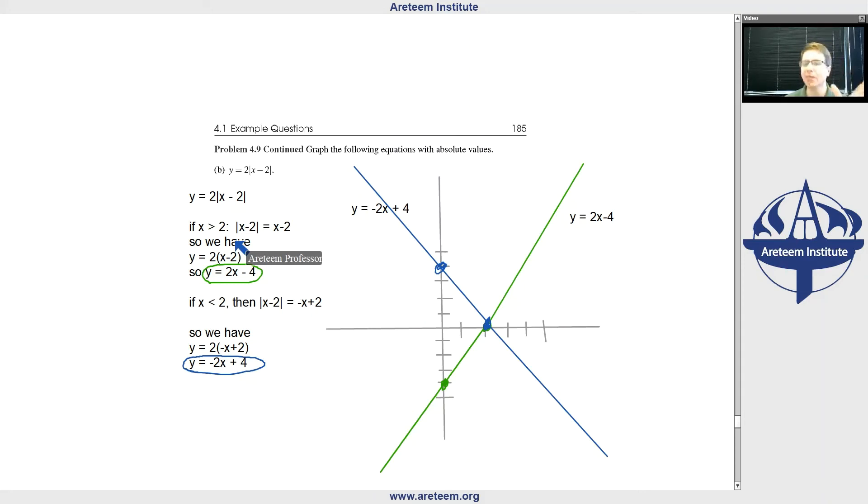Now, do we have all of this? No. Remember, we only want the green line when x is bigger than 2. So we have to delete this part of the green line below x equals 2. Similarly, we delete the blue line when it's above x equals 2. So we're left with, again, a V.